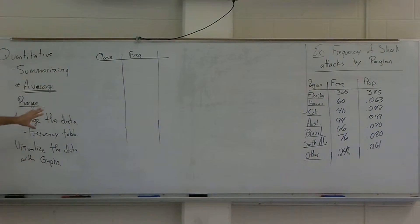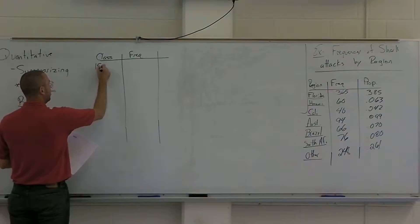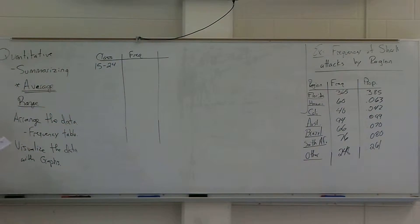So the first column here is going to represent the class. All the class is, is just a range of scores that I'm going to put out there. In the first category I'm going to put all the people that scored between 15 and 24 touchdowns.